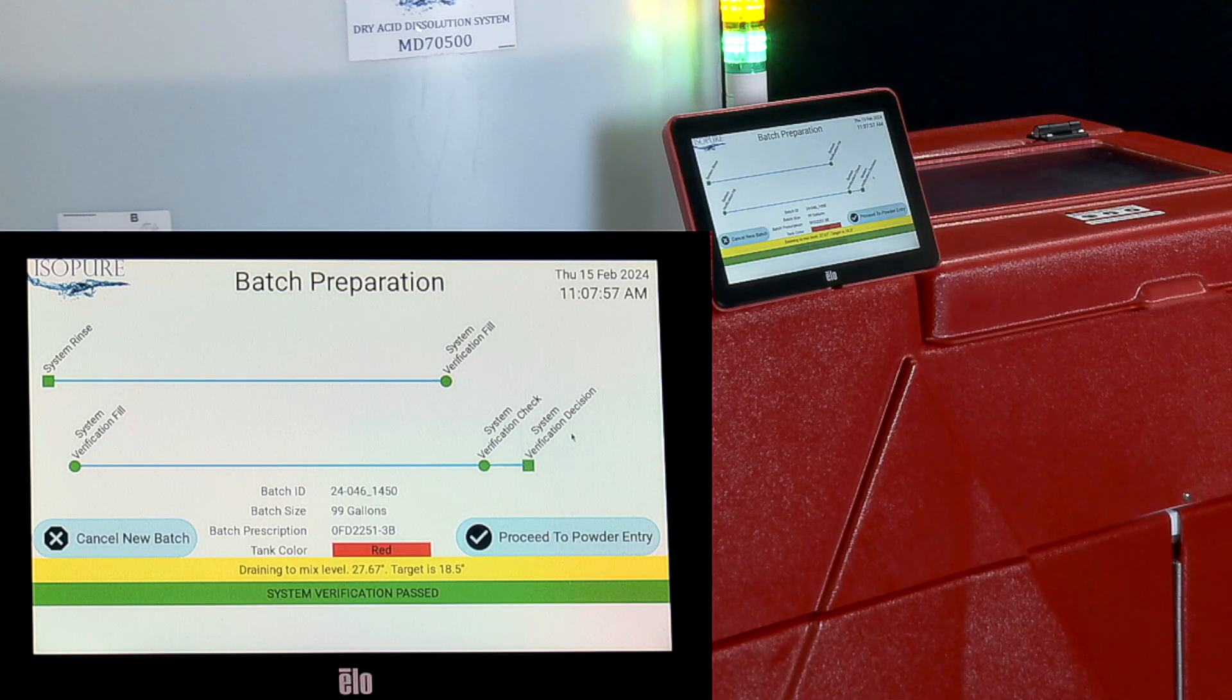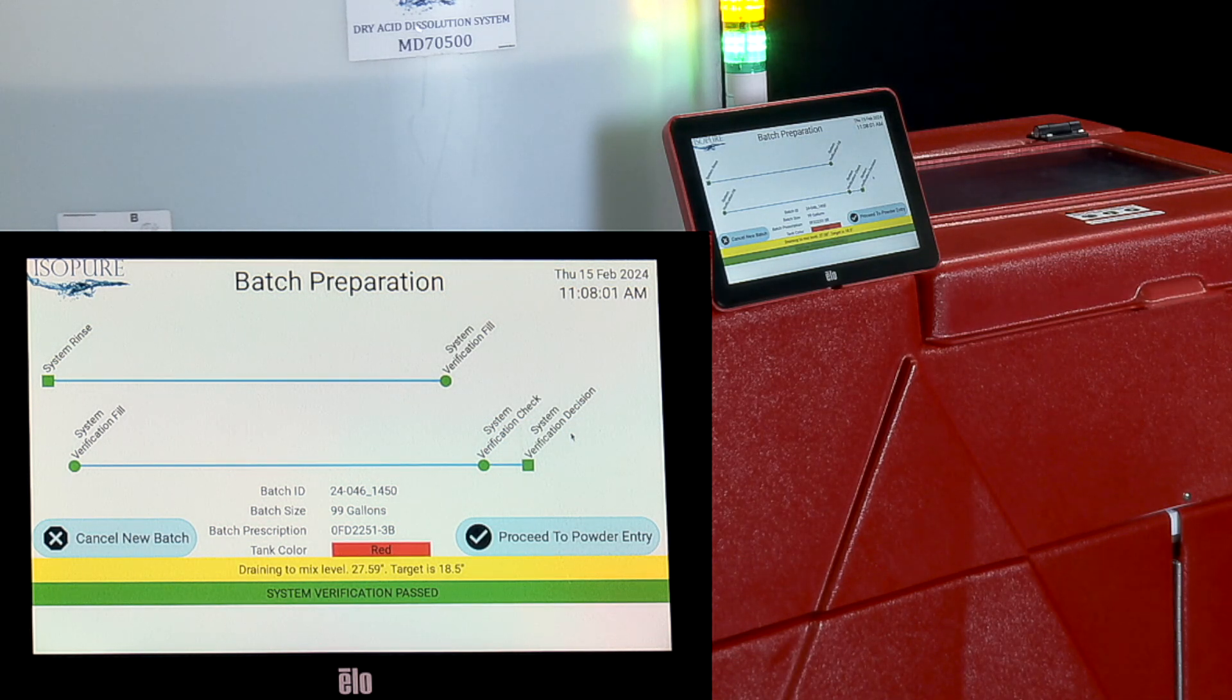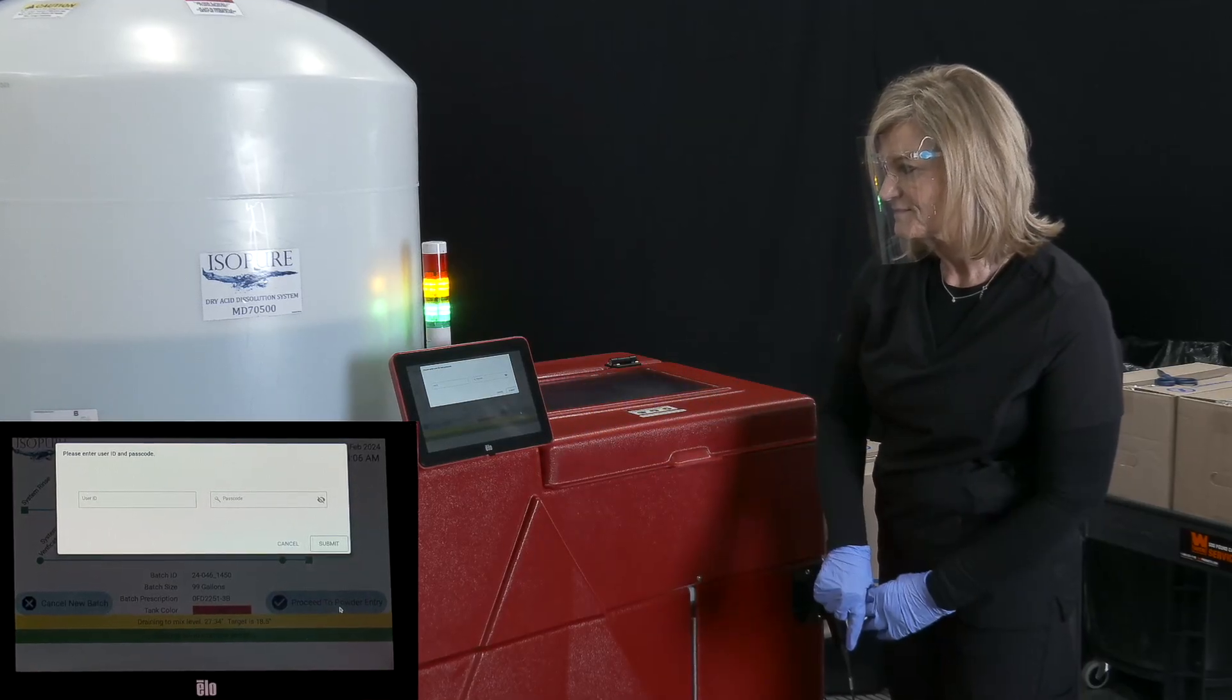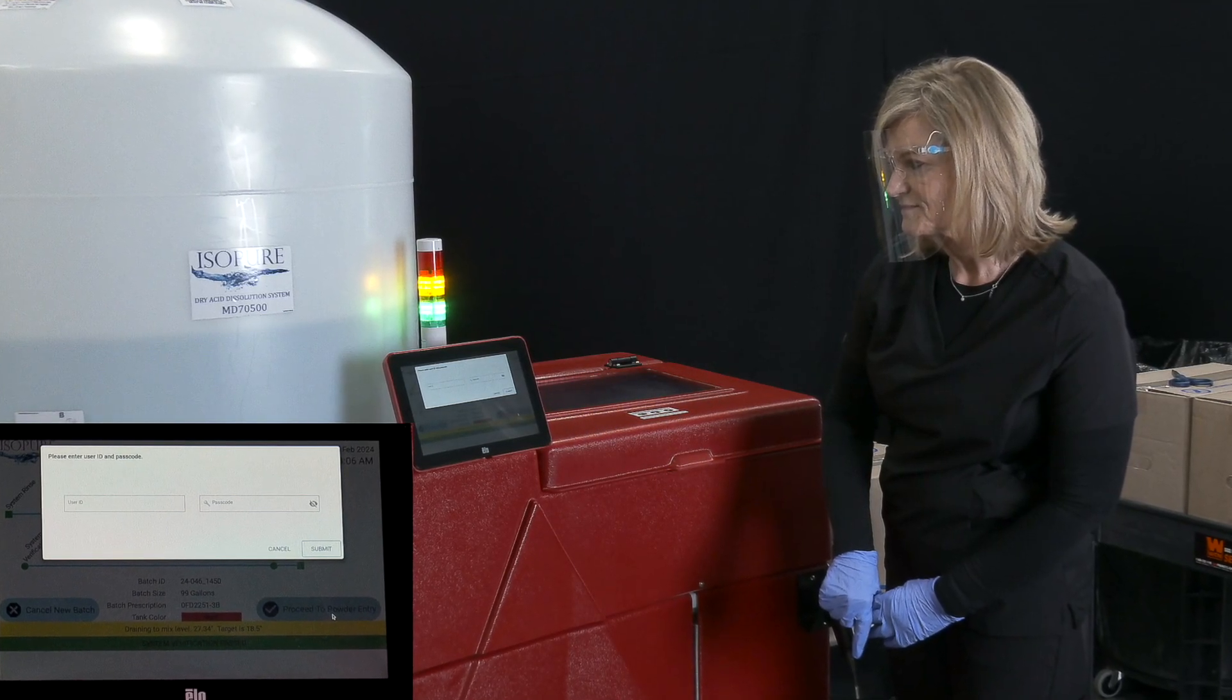After the system has passed all verifications, the green banner and Proceed to Powder Entry button will appear, allowing the operator to begin adding the dry acid granules.